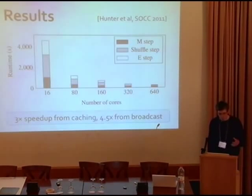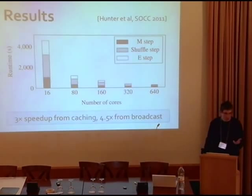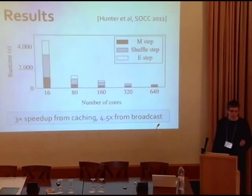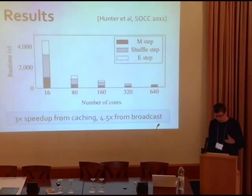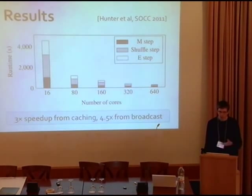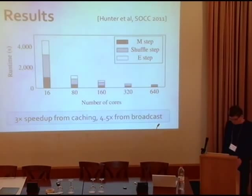Results show this scaling on a cluster at NERSC (Department of Energy Computing Center) from 4 machines up to 160 machines each with four cores, achieving essentially linear scalability because the algorithm is mainly CPU-bound. Using Spark's caching feature gave a factor of 3 speedup over the initial version, and using broadcast allowed disseminating the parameters about four times faster. There's a paper on this at the Symposium on Cloud Computing.